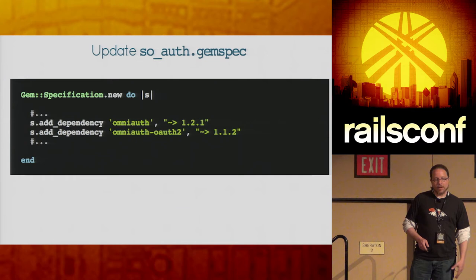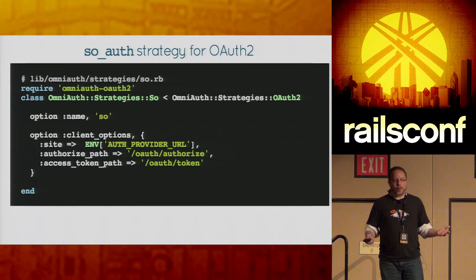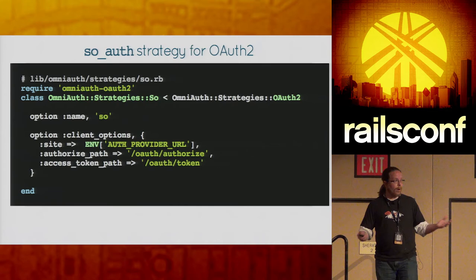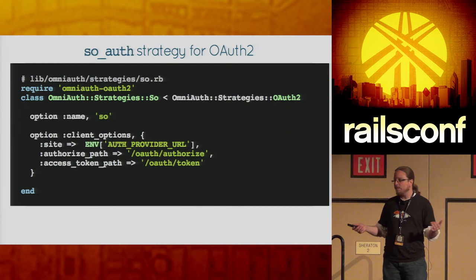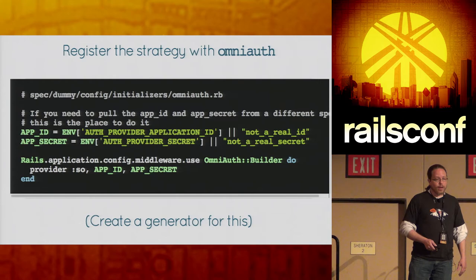The first bit is to update the gem spec to tell it we need OmniAuth and the OmniAuth OAuth2 gem. Then we need to create a strategy for OmniAuth. A strategy is a bit of code that tells OmniAuth where to find your provider and how to deal with information it gets back. For the first part, all we do is tell it where the provider lives: we give it the name of the strategy and set some client options — just the site URL of the provider itself, and two endpoints: where to go to authorize a user, and where to go to find a token about the user.